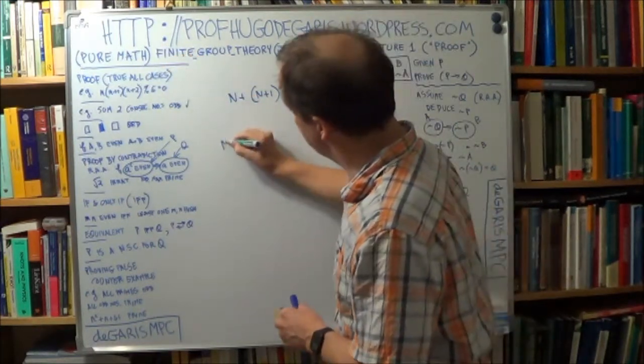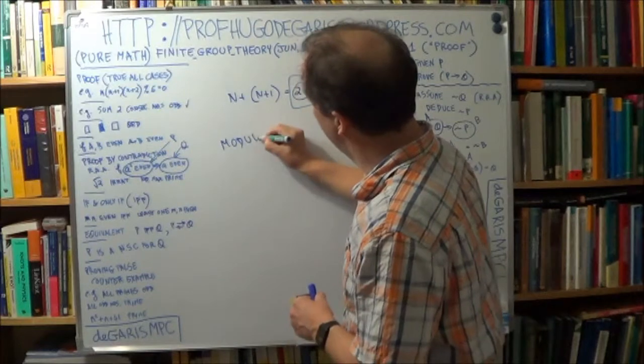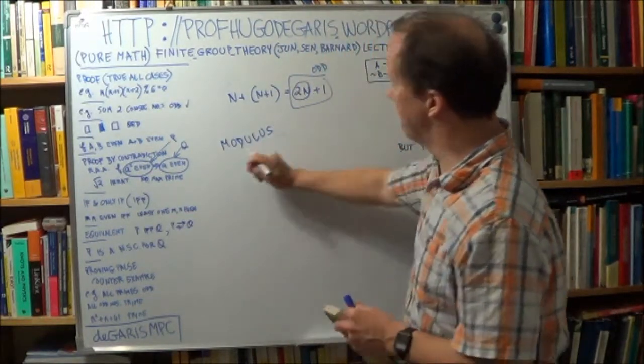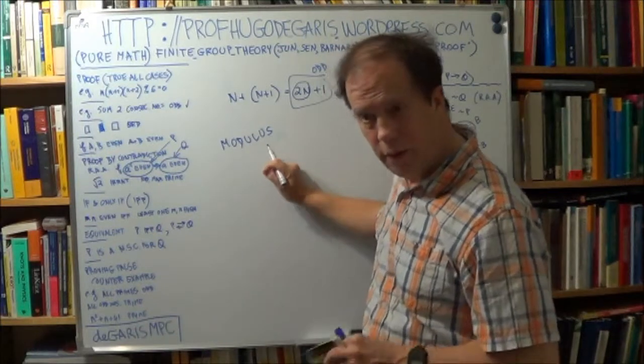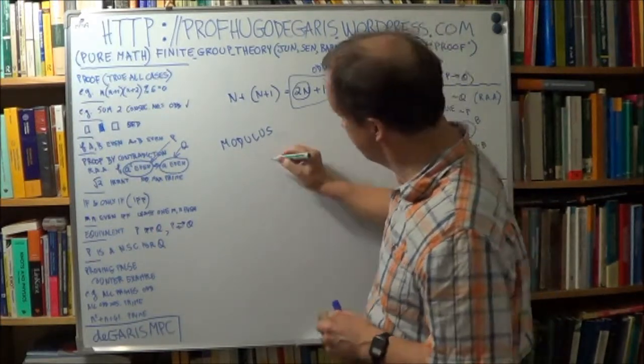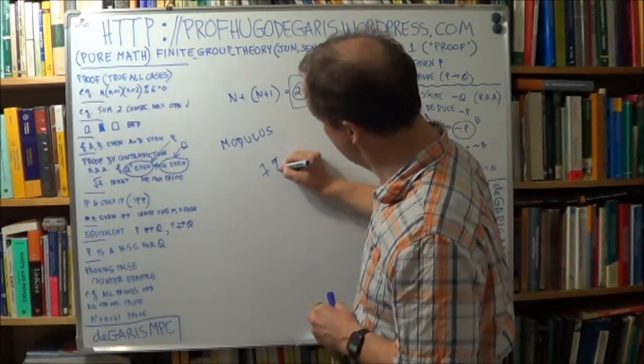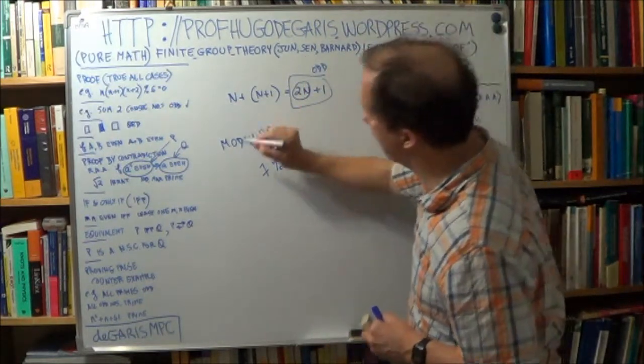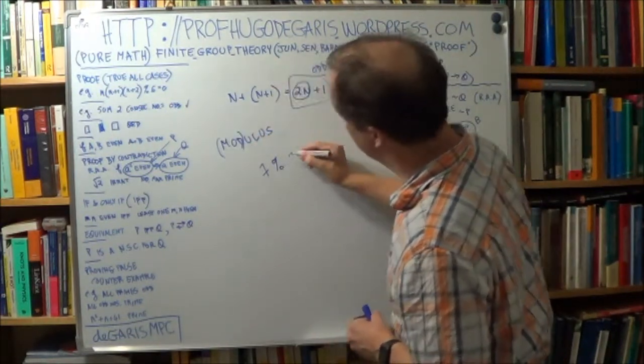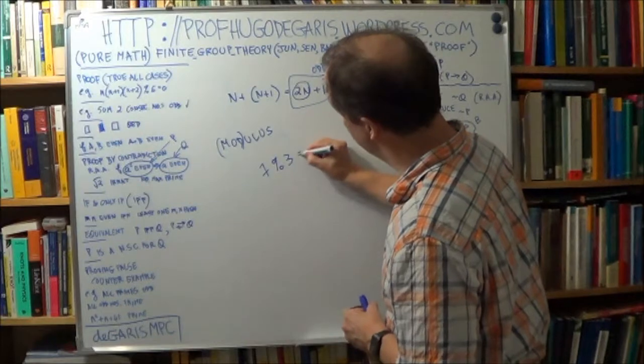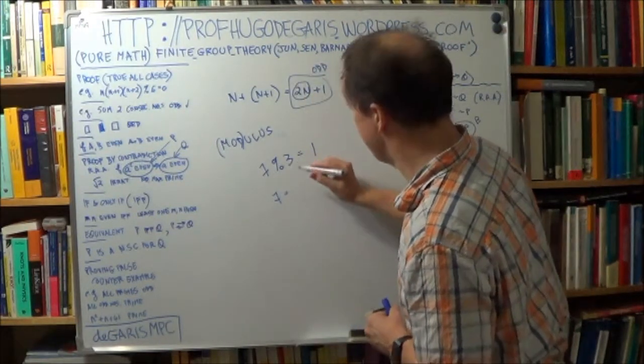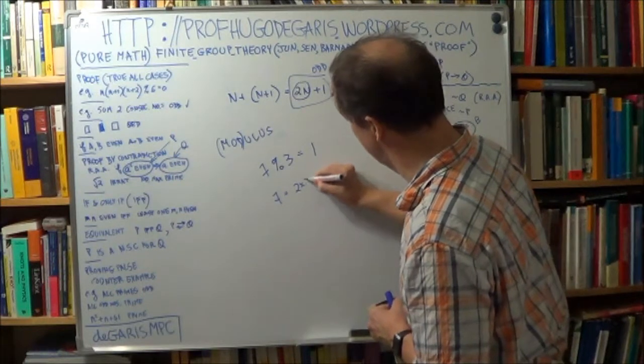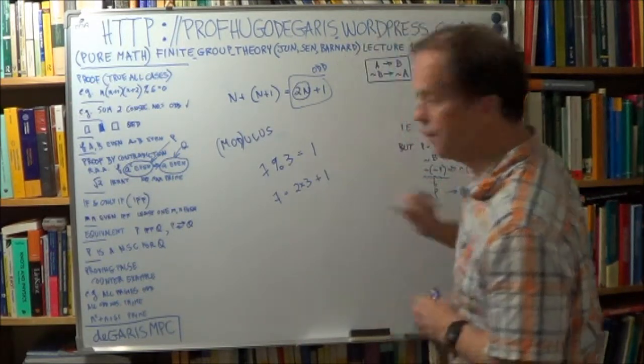And if you're familiar with this little symbol here, the percentage sign, in this case it means modulus. What does that mean? It's the result, the remainder, what's left over after you do a division. So for example, 7 mod 3 is 1. Why is that? Because 7 is the same as 2 times 3 plus 1, okay?